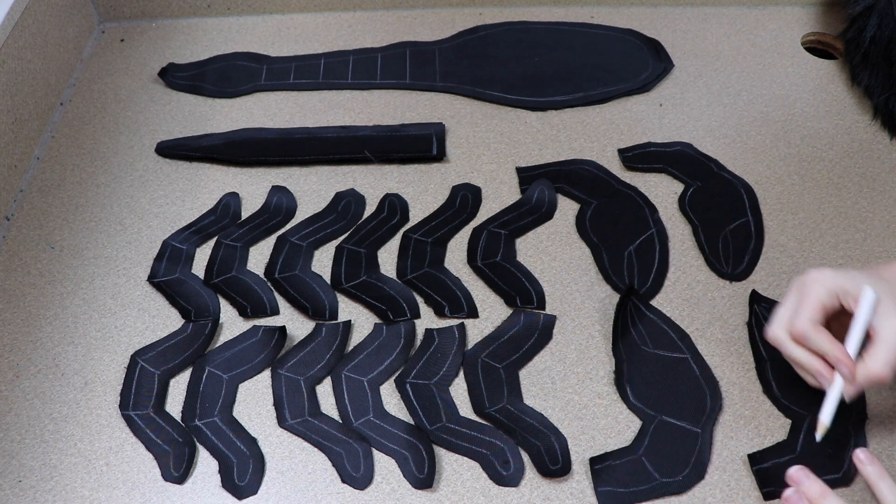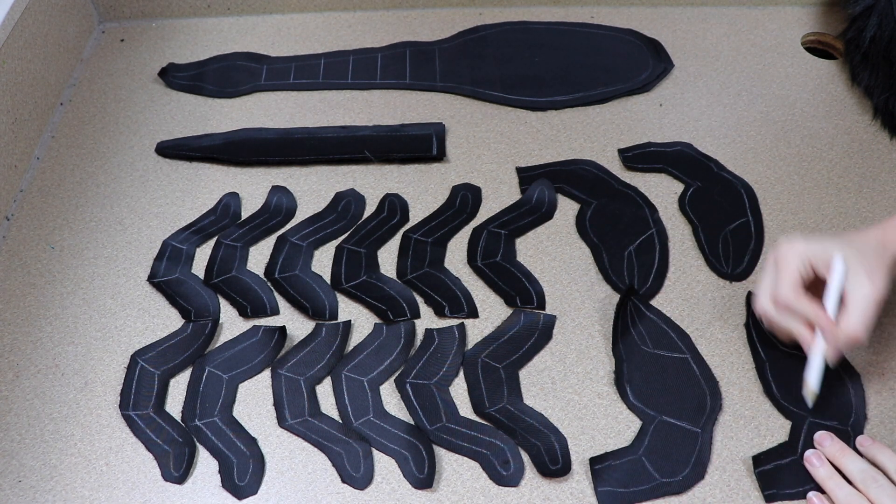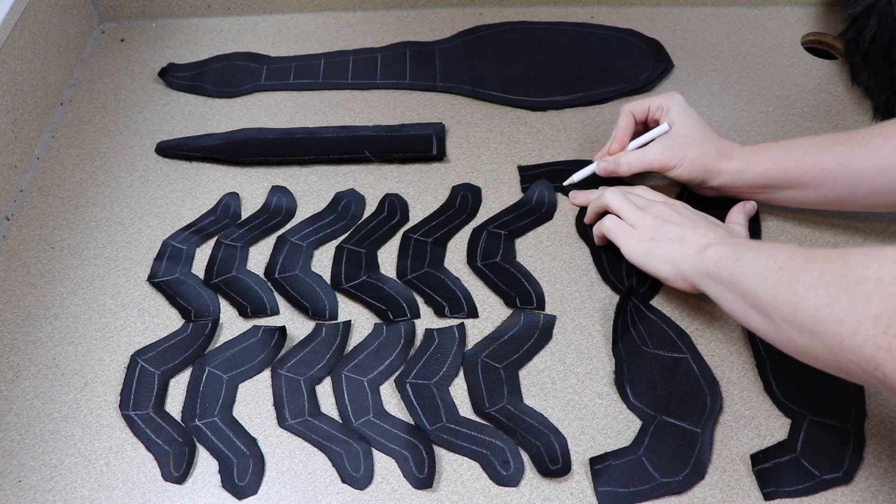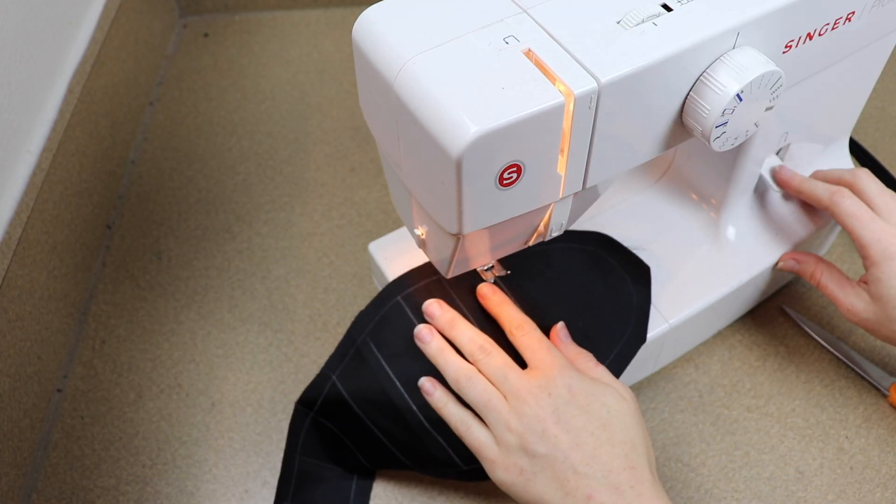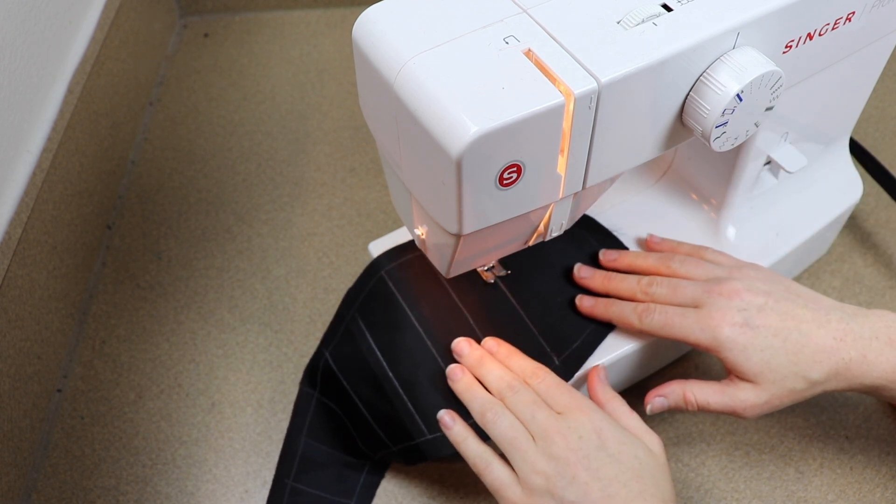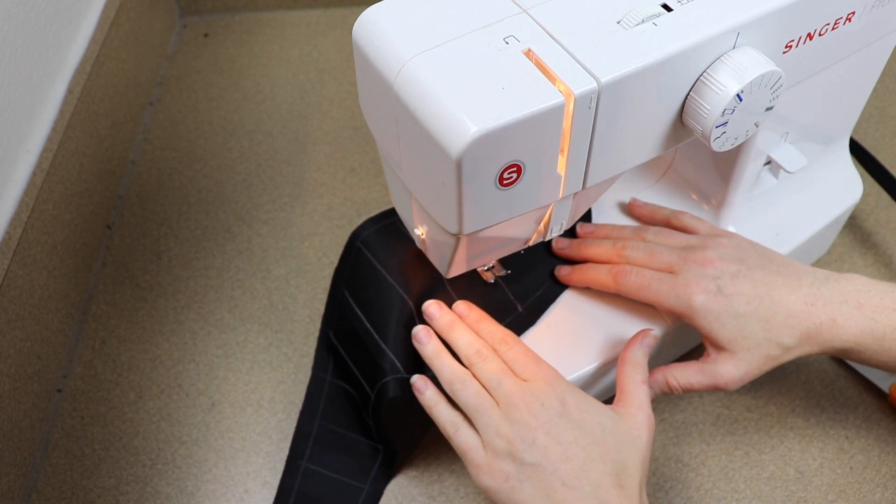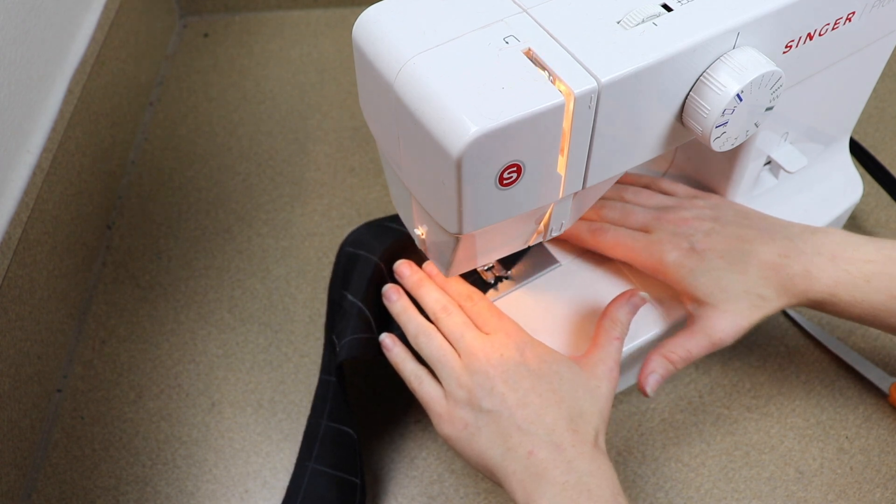Now before I start putting everything together I decided that I wanted to mark out the little joints. So I'm going to take my sewing machine and I'm going to go along all these lines. So we're going to do this to all the legs and we're also going to be doing it going down the body. So I'm going to kind of separate the body in sections as well.